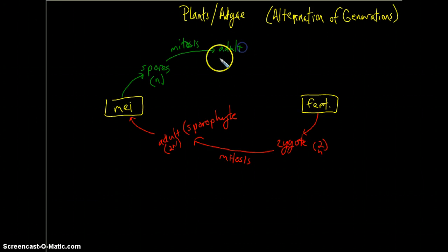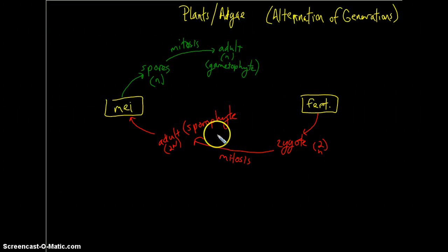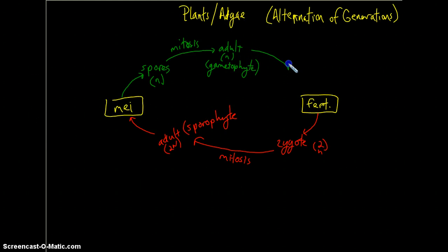Now, these spores will then grow through mitosis into another adult plant. Now, this adult is haploid, so it's just 1N, and it's called the gametophyte, which is appropriate because it will ultimately end up producing the gametes. So the sporophyte produces the spores, the gametophyte will end up through mitosis, since you already have a haploid organism, through mitosis it will end up creating the gametes.